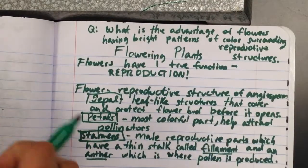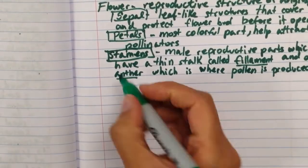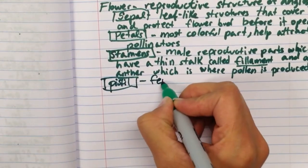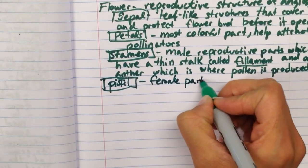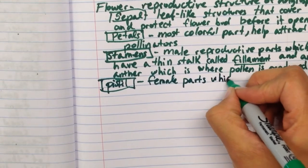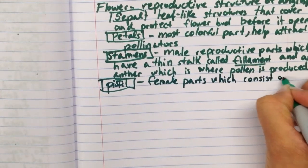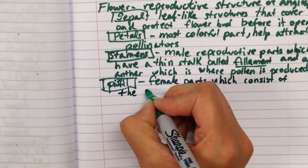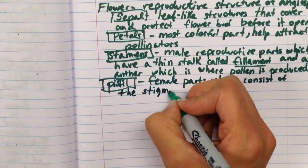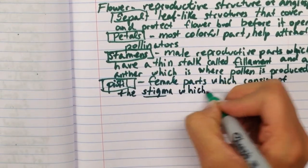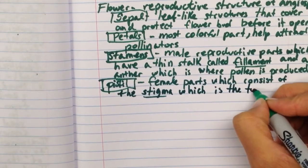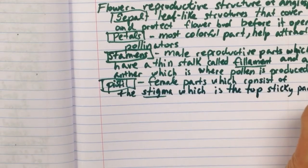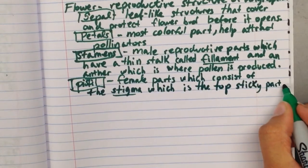Next, we have the pistil. The pistil, as you guessed it, is the female part, female parts, which consists of the stigma, which is the top sticky part. It's sticky so that the pollen can actually stick to it.